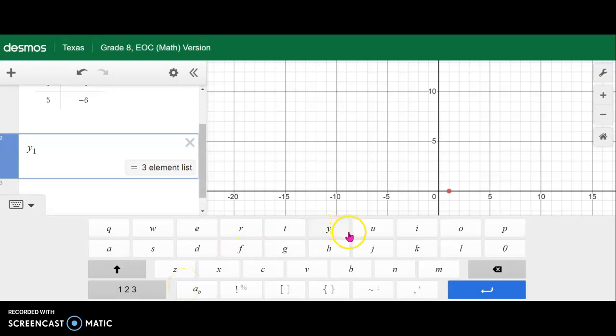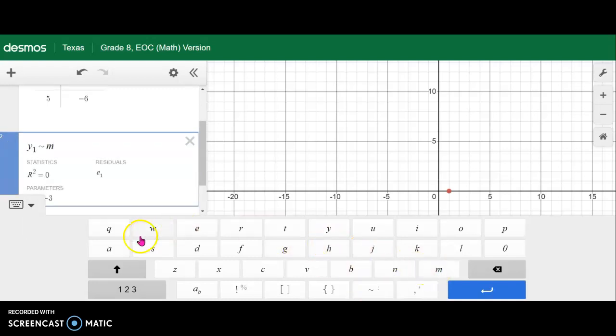So normally it's y equals, but we don't use an equals for this. We actually use this little squiggle symbol here, the approximate symbol. And then mx. Remember it's not x, it's x sub 1. And then plus b.